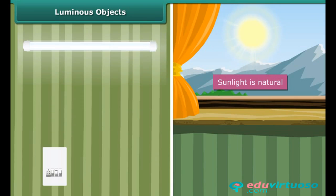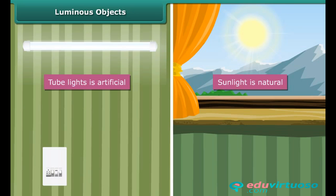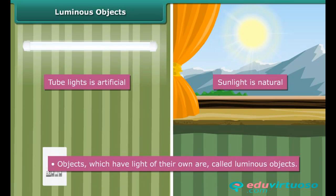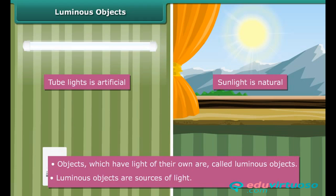Sunlight is natural light, while light from tube lights is artificial. Objects which have light of their own are called luminous objects. In our example, both the sun and tube lights are luminous objects. The sun is a natural luminous object and tube lights are artificial, man-made luminous objects. Luminous objects are sources of light.